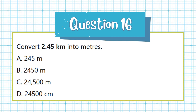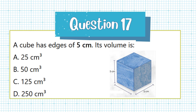Question 17. A cube has edges of 5 cm. Its volume is: a. 25 cubic centimeters, b. 50 cubic centimeters, c. 125 cubic centimeters.